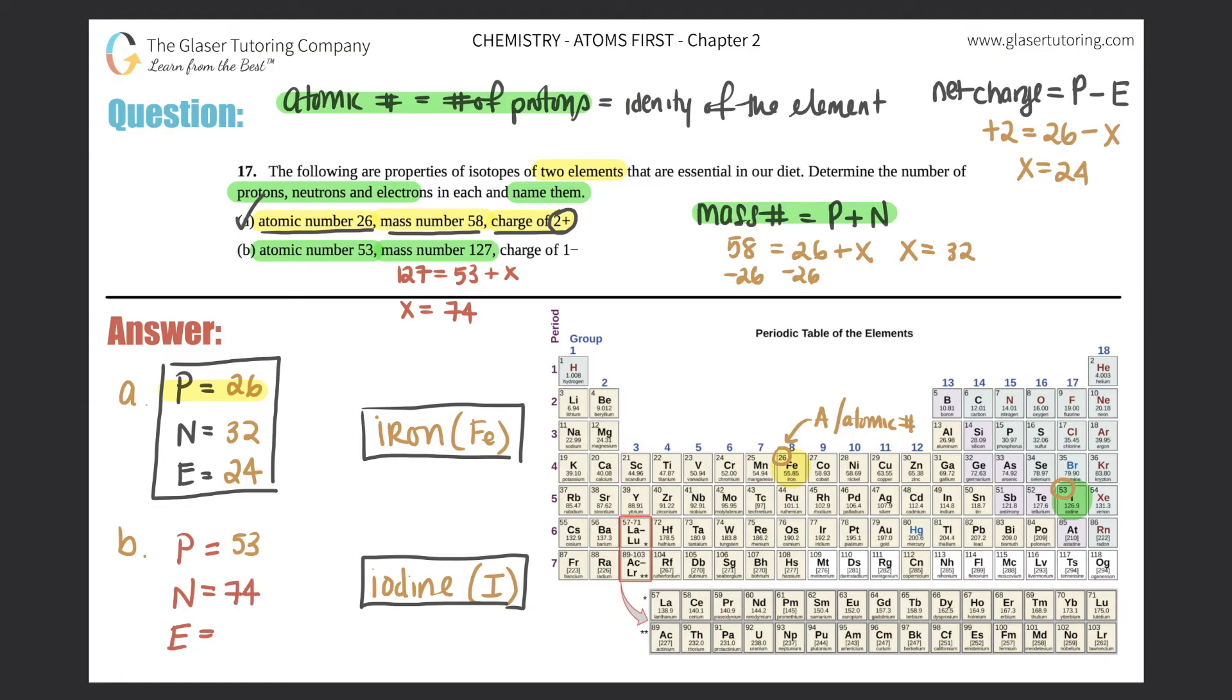And last but not least, we have to find out how many electrons there are by the charge. They gave us a charge of negative one, right? And the net charge equals protons minus electrons. So in this case, the net charge was a negative one. So negative one equals, we found out that we had 53 protons. So 53 minus x.